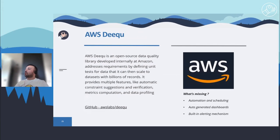AWS DQ is an open-source data quality library developed by Amazon. It is built on top of Apache Spark, so it is scalable and great at handling big data. DQ can be used for both Scala and Python-based pipelines. It allows you to calculate data quality metrics on your dataset, define and verify quality constraints, and be informed about changes in the data distribution. There are various metric options for AI purposes such as standard deviation, correlation, histogram, entropy, and approximate quantile.